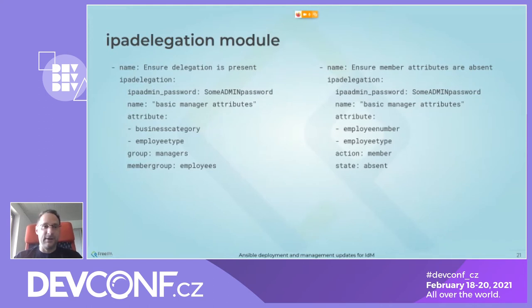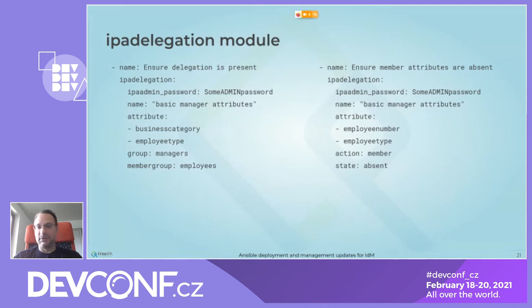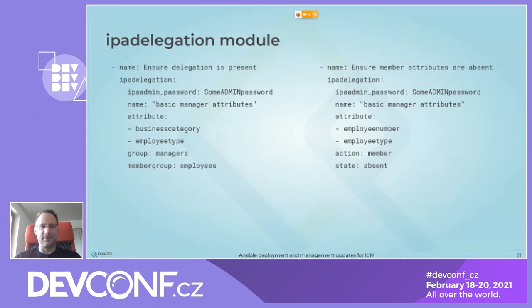For the ipa_delegation module, the first example ensures that a delegation is present with attributes 'businessCategory' and 'employeeType', group 'managers', and member group 'employees'. The second example shows using action 'member' to make attributes absent — here 'employeeType' and 'employeeNumber' are set absent for the delegation named 'basic manager attributes'. You can use 'present' to ensure attributes are present, remove delegation entries, and also change groups and member groups.